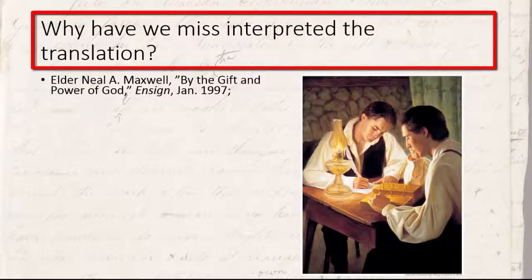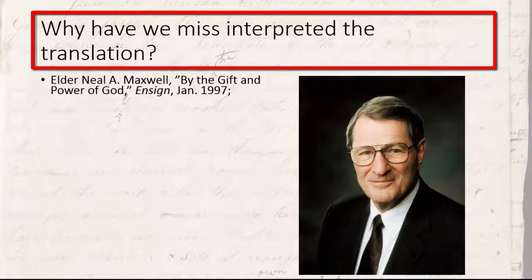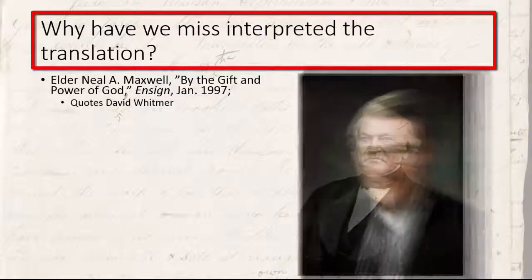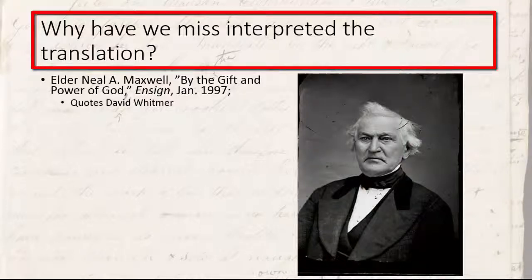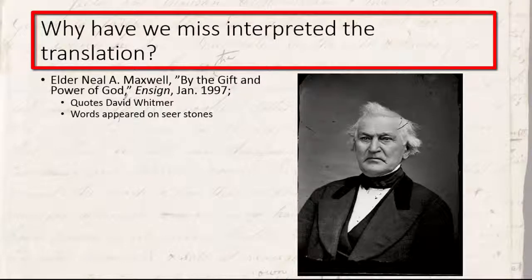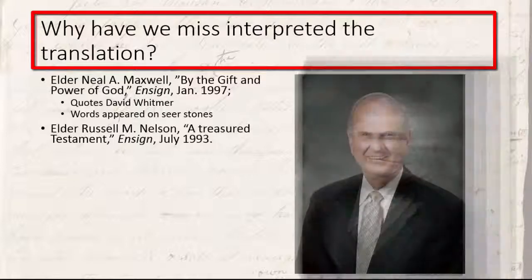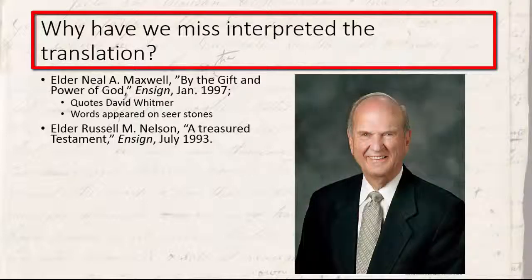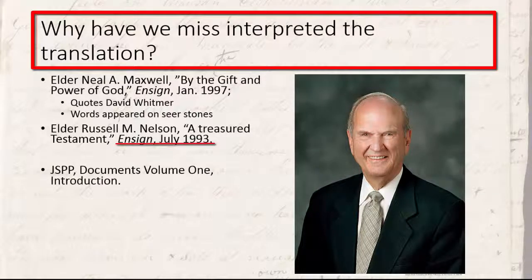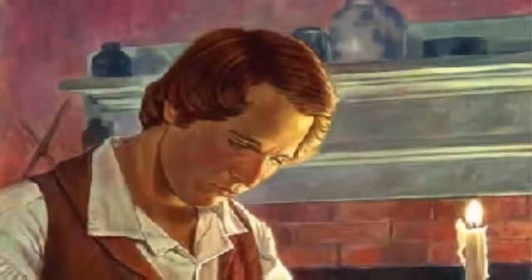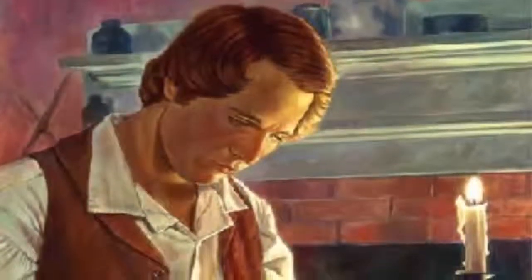Neil A. Maxwell's talk "By the Gift and Power of God" appeared in the Ensign in January 1997. In his descriptions he uses very clear language about how the translation occurred, quoting David Whitmer — one of the clearest accounts describing the translation of the Book of Mormon — and noting that words appeared on seer stones, something we don't readily talk about. Additionally, Russell M. Nelson authored an article called "A Treasured Testament" in the Ensign in 1993. These two pieces discuss the concept of translation very clearly, so to think that in the last 25 years the church has been hiding how the translation occurred is probably not exactly true.